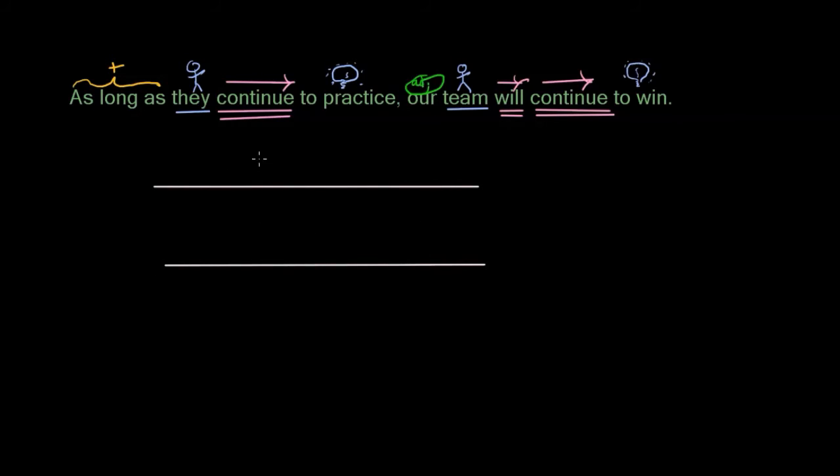They're kind of fun to diagram because we get to draw those little platforms. We have one adjective modifying 'team' — 'our team' — where 'our' is a possessive pronoun that, unless it stands by itself, will be an adjective. And we have a three-word subordinating conjunction, 'as long as,' which is kind of like saying 'if.' We'll diagram it — we have two clauses, so we'll have two baselines, two bisecting lines, and we'll set up for two direct objects.